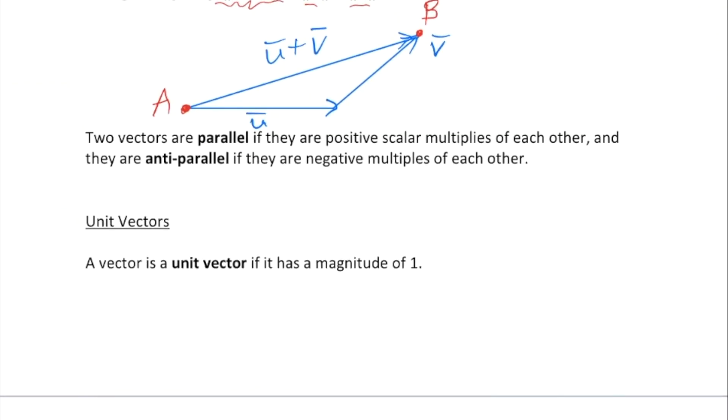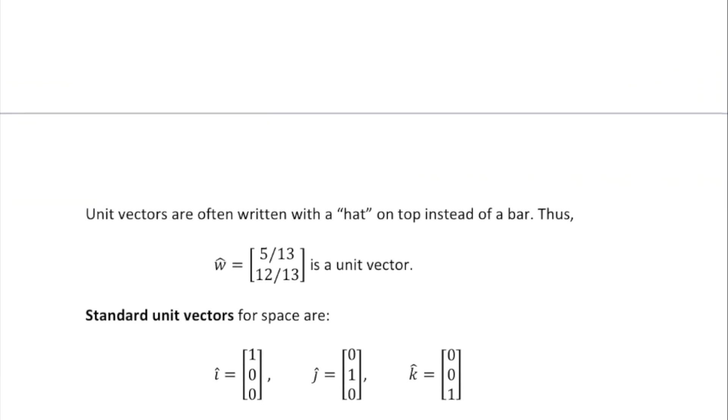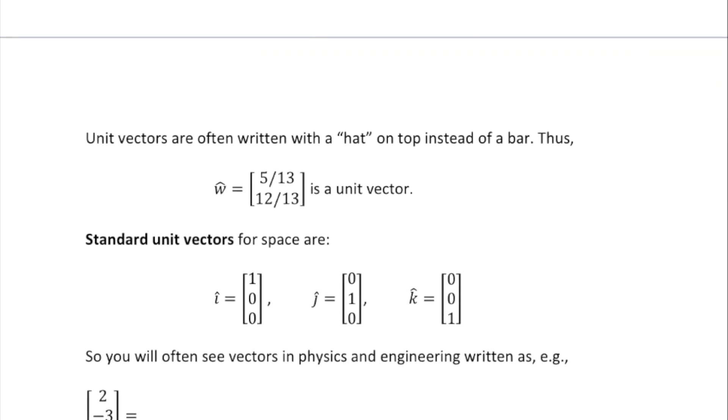Let's talk about unit vectors. A vector is a unit vector if it has a magnitude of one. Unit vectors are often written with a hat on top instead of a bar. For example, here we've got w hat. That is a unit vector: [5/13, 12/13] has magnitude one.